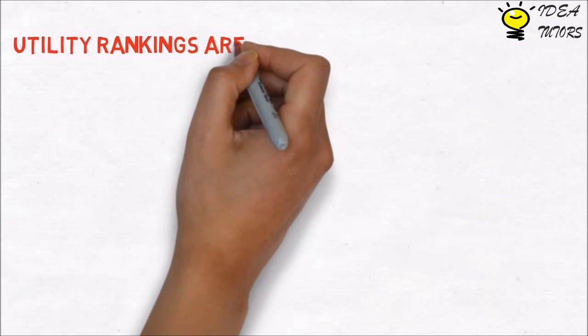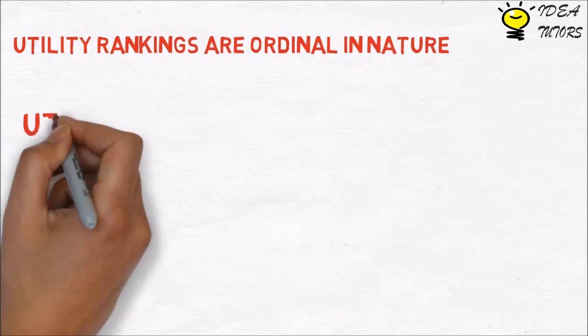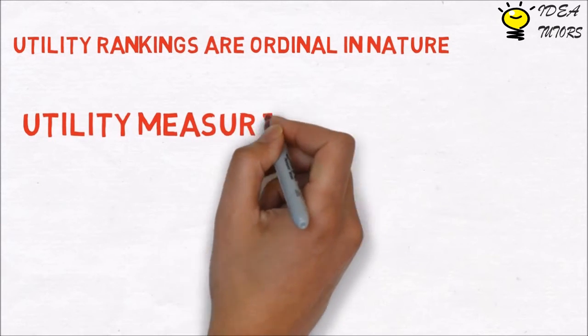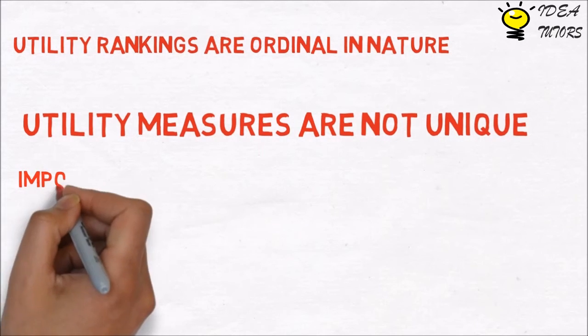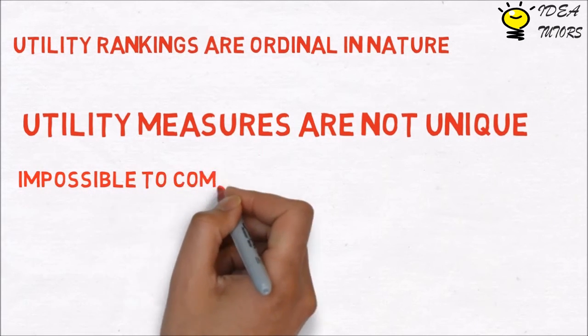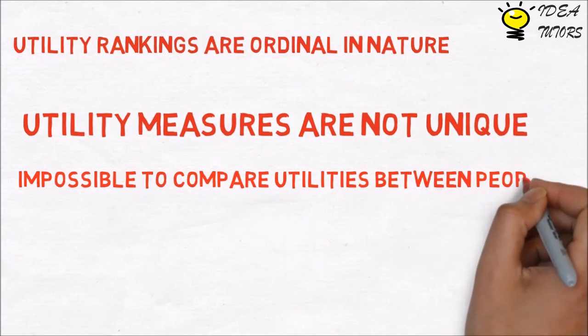Utility rankings are ordinal in nature. They record the relative desirability of commodity bundles. Because utility measures are not unique, it makes no sense to consider how much more utility is gained from A than from B. It is also impossible to compare utilities between people.